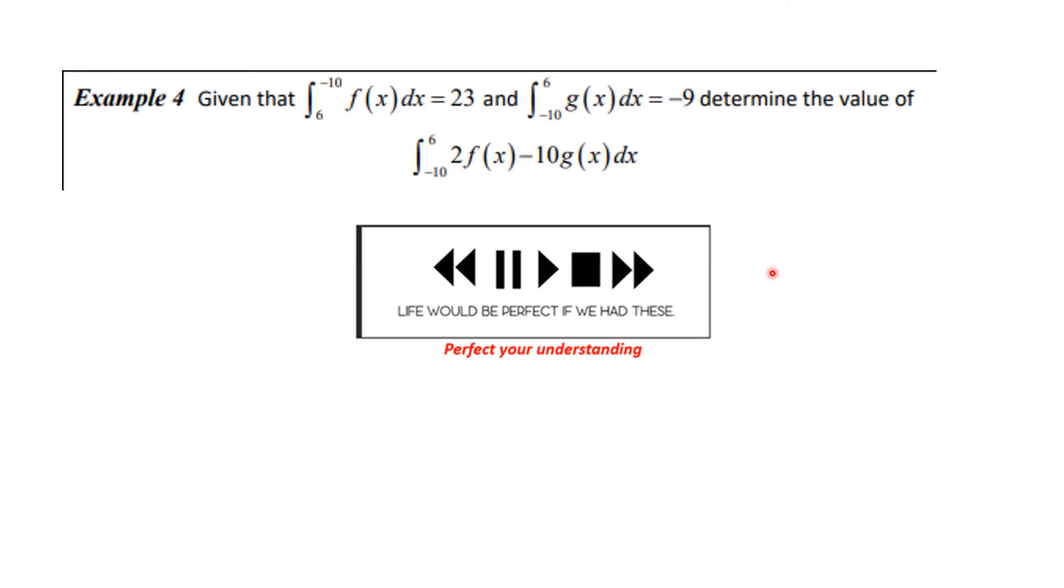Here's number four. Suppose that the integral from 6 to minus 10 of f(x)dx is 23, and the integral from minus 10 to 6 of g(x)dx is equal to minus 9. Determine the value using the properties of the definite integral from minus 10 to 6 of 2 times f(x) minus 10 times g(x)dx. You know what to do.